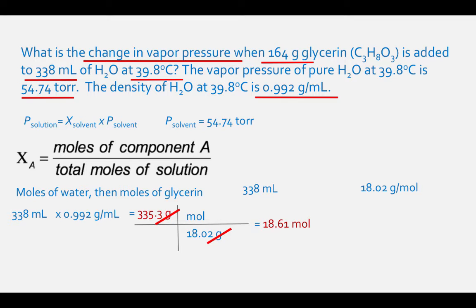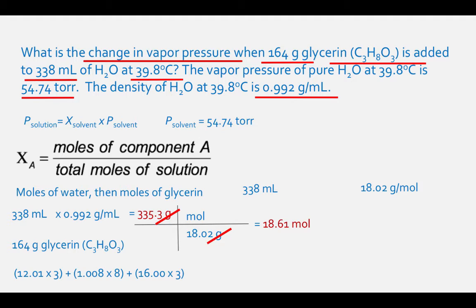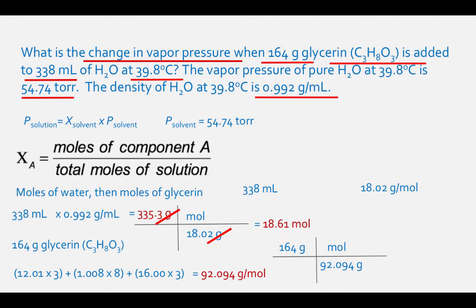Now we also need to calculate the moles of glycerin, the solute. They gave us 164 grams of glycerin and the molecular formula C3H8O3. First, calculate the molar mass of glycerin: carbon is 12.01 times 3, hydrogen is 1.008 times 8, and oxygen is 16.00 times 3, which equals a molar mass of 92.094 grams per mole. Then 164 grams divided by 92.094 grams per mole equals 1.781 moles of glycerin.